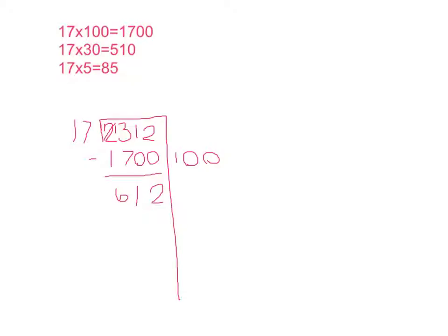So I can see 510 is quite close. So I'll try that. And then I'll put 30 next to it because there are 30 seventeens in 510. Then I'll subtract.